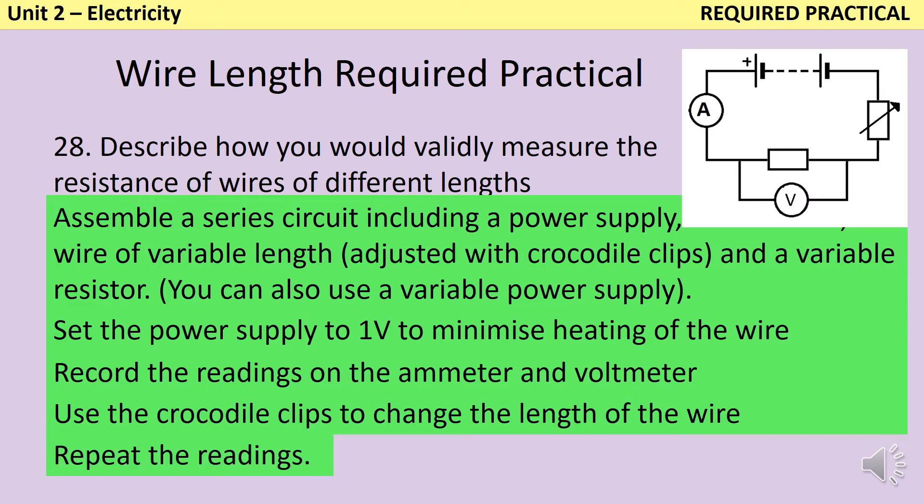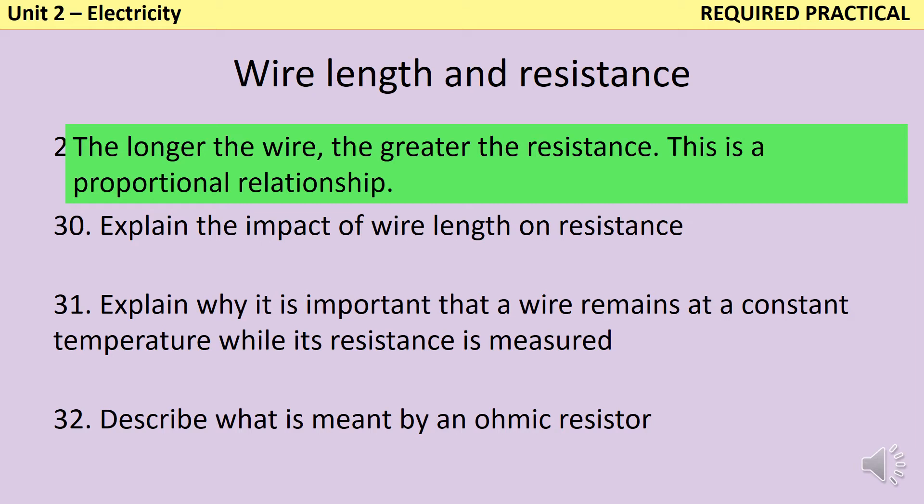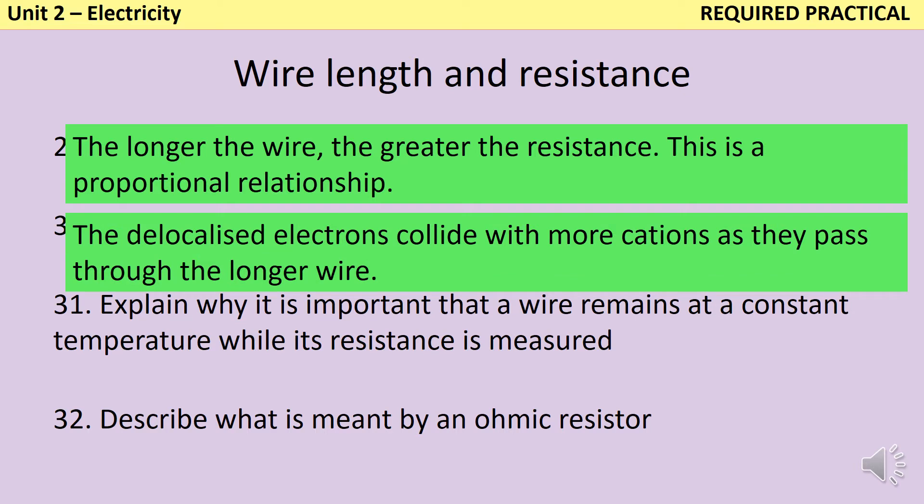You then use your ammeter and your voltmeter readings to calculate the resistance for each length of wire. The longer a wire, the higher its resistance, and this is a directly proportional relationship. So as you double the length of the wire, you double the resistance. The reason for this is the interaction between the electrons and the positive ions that they're going past. You have to remember that positive ions do not only contain positive particles; there are still electrons on the outside of it. And so as the delocalized electrons come past, they're repelled by the electrons that make up the positive ion. So the longer the wire, the more ions the electrons are going to interact with, and therefore the higher the resistance. As the wire heats up, those positive ions are going to vibrate more, and therefore they're going to interact more with the electrons, and this is going to increase the resistance.